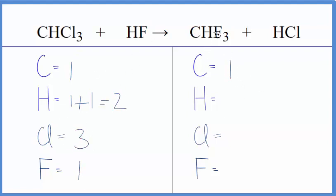Product side we have the one carbon, one hydrogen, plus the one here. So we have two over here, one chlorine, and then three fluorine atoms.